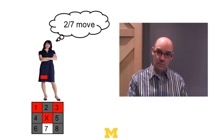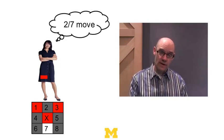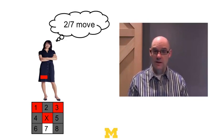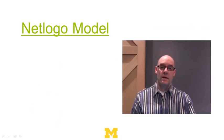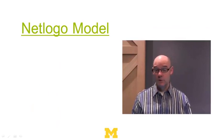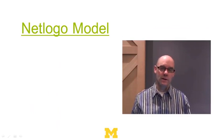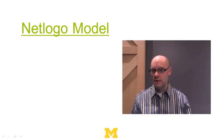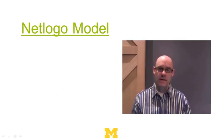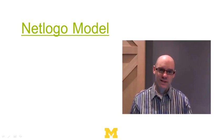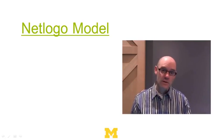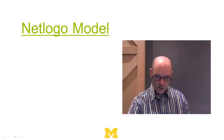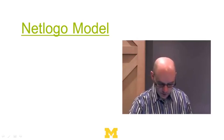When Schelling ran his model, he did it on paper and pencil on an airplane, using nickels and pennies to represent different income groups. We have an advantage — we'll use a computer program called NetLogo, which is free software. Let's go to the NetLogo model.